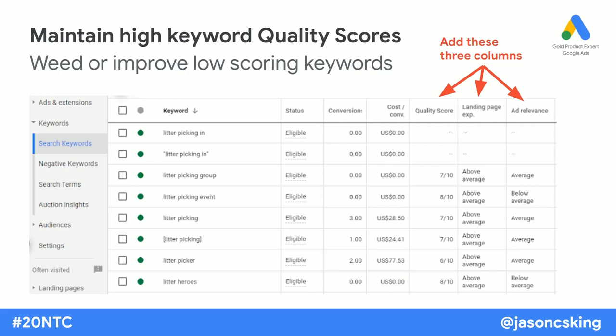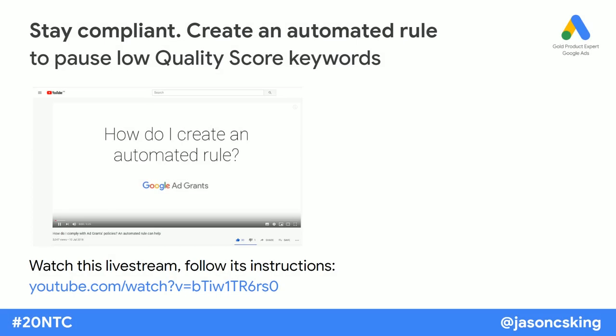Whilst you should weed out really low-scoring keywords that are irrelevant, you might sometimes find a keyword that should be doing better. In that case, try to improve the ad text or the landing page, as per what Google is telling you is at fault. Scoring one or two can get your account suspended temporarily, so create an automated rule that pauses those low quality score keywords — not removes them. Follow the instructions in the official live stream by the Ad Grants team, make sure this runs daily, and have it email you when it's done.